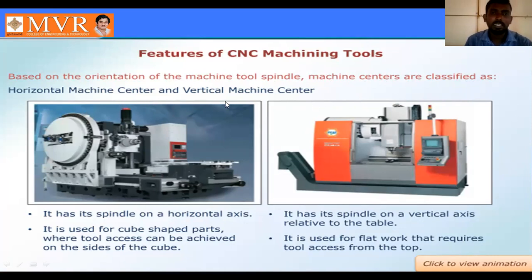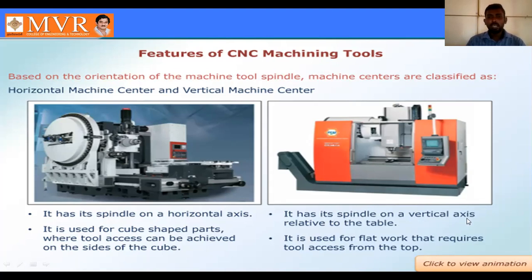The first type is the horizontal machining center and the second one is the vertical machining center. In a vertical machining center, the spindle is on a vertical axis relative to the table. The spindle is not in a horizontal line action - it operates on the vertical axis.